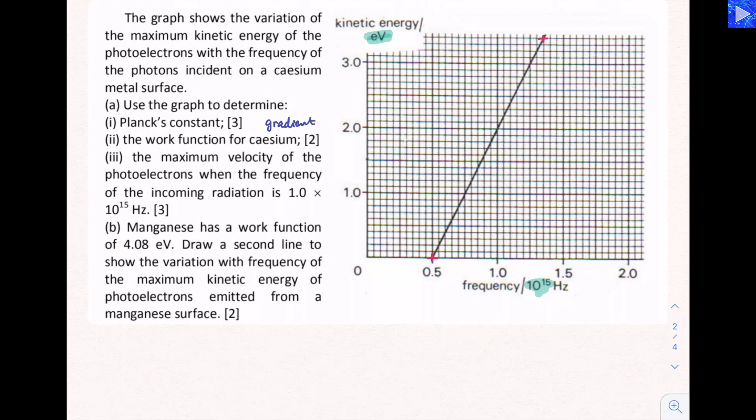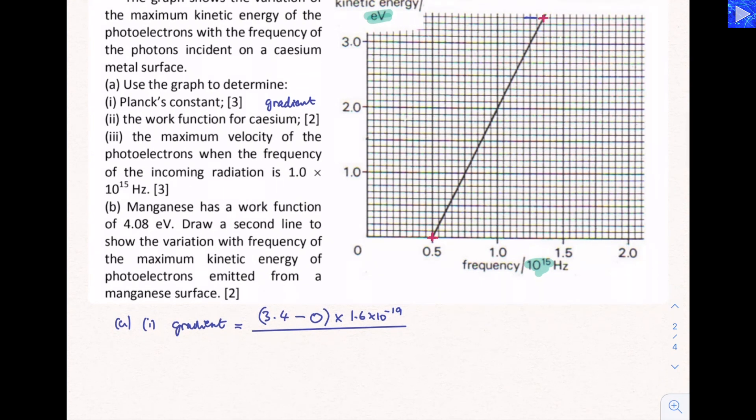So the gradient, part one. When you're doing graph work, if you're working out the gradient, it's a good idea to write down that's what you're working out. Make things clear for an examiner if you're doing this in an exam situation. So what points have we got here? We want Y2, Y2 is up here. That's going up in 0.1's for each small square. So that would be 3.4 minus 0 because our Y1 value is 0. Here I'm going to include the conversion factor for eV. So that's going to be 3.4 times 1.6 times 10 to the minus 19. And X2 would be...